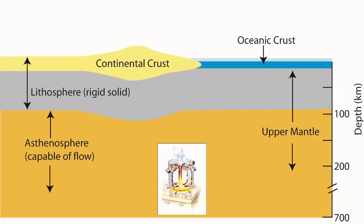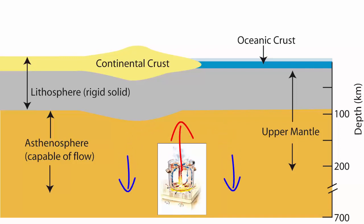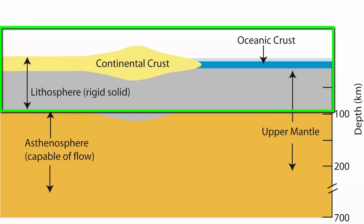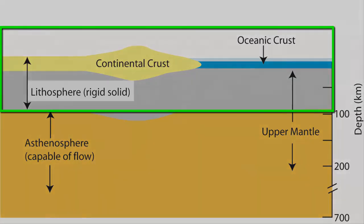Thus it convects: hotter, less dense material rises, displacing colder, denser material which sinks. The rest of the upper mantle plus all of the crust are fused together. We call that combination of crust plus upper mantle that sits above the asthenosphere the lithosphere.